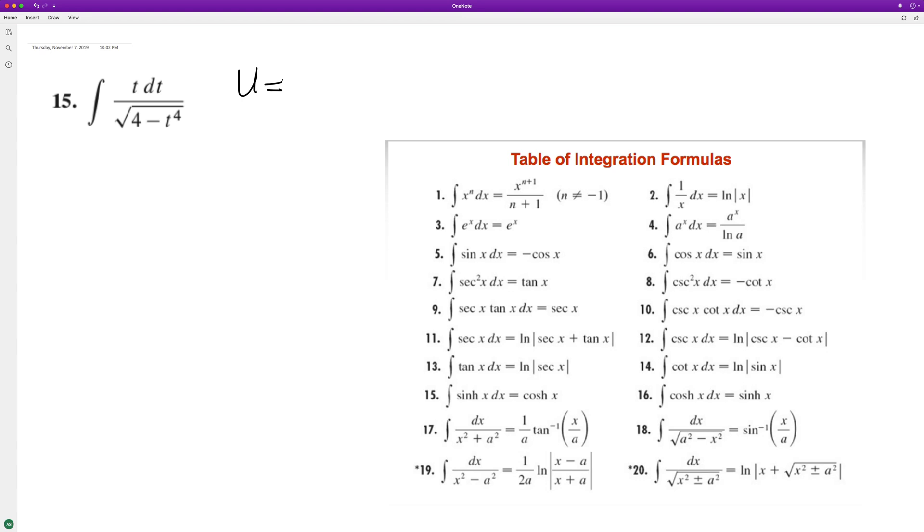So we'll set u equal to t squared. Let's see, make sure that's right. Yeah, so then we'll have u squared, and then what we'll do is du is equal to 2t, then 2t dt.